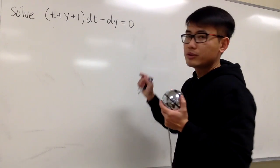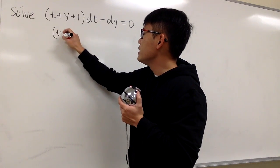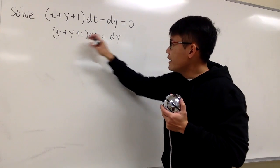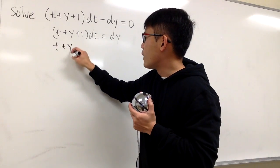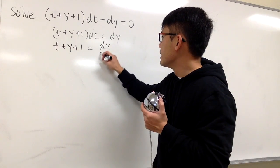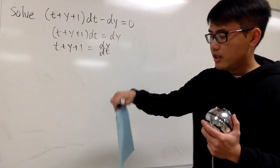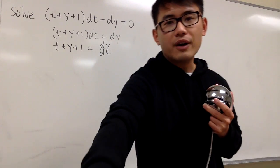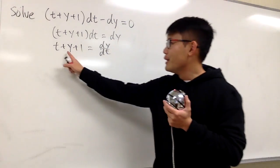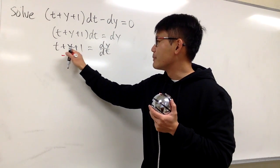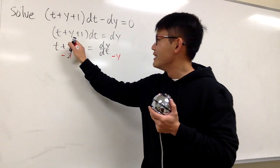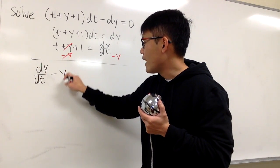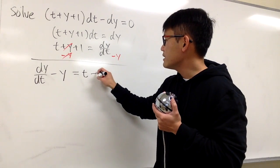I can do so by adding dy on both sides, and we will have (t plus y plus 1) dt equals dy on the right-hand side. Then I can divide dt on both sides, so we get t plus y plus 1 equals dy/dt. Now I also need to isolate y, so I subtract y on both sides, giving us dy/dt minus y equals t plus 1.